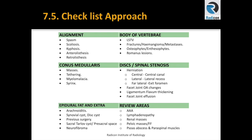Bone marrow issues also include Romanus lesions and ankylosing spondylitis. C for conus — we looked at masses, tethering, myelomalacia, myelopathy, and syrinx, which will be shown in the case examples.